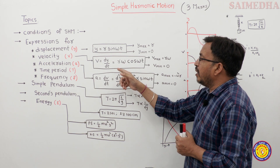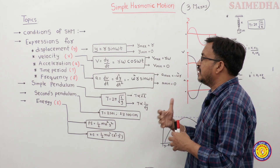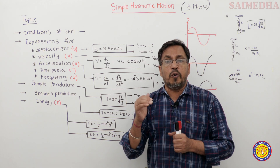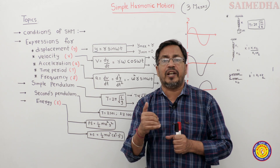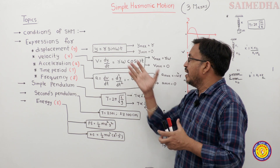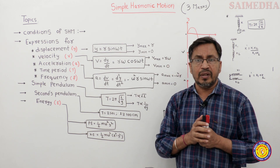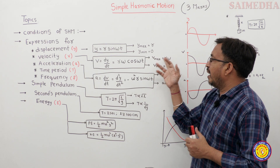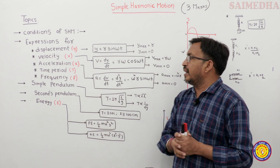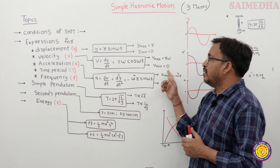Velocity is v = r·ω·cos(ωt). From the displacement equation, we derive the standard equation: v = ω√(r² − y²). This is derived using the relation sin²θ + cos²θ = 1. So maximum velocity v_max = rω, and minimum velocity v_min = 0.